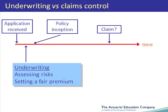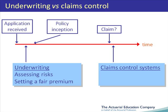Claims control systems will take place soon after a claim is incurred and reported. It is the process by which the insurance company identifies claims that are either excessive — for example, a small dent to a car that is reported to require significant work to repair at a large cost — or fraudulent. Claims control will involve obtaining details of the claim and using this information and experience in order to assess whether the claim is reasonable and valid.